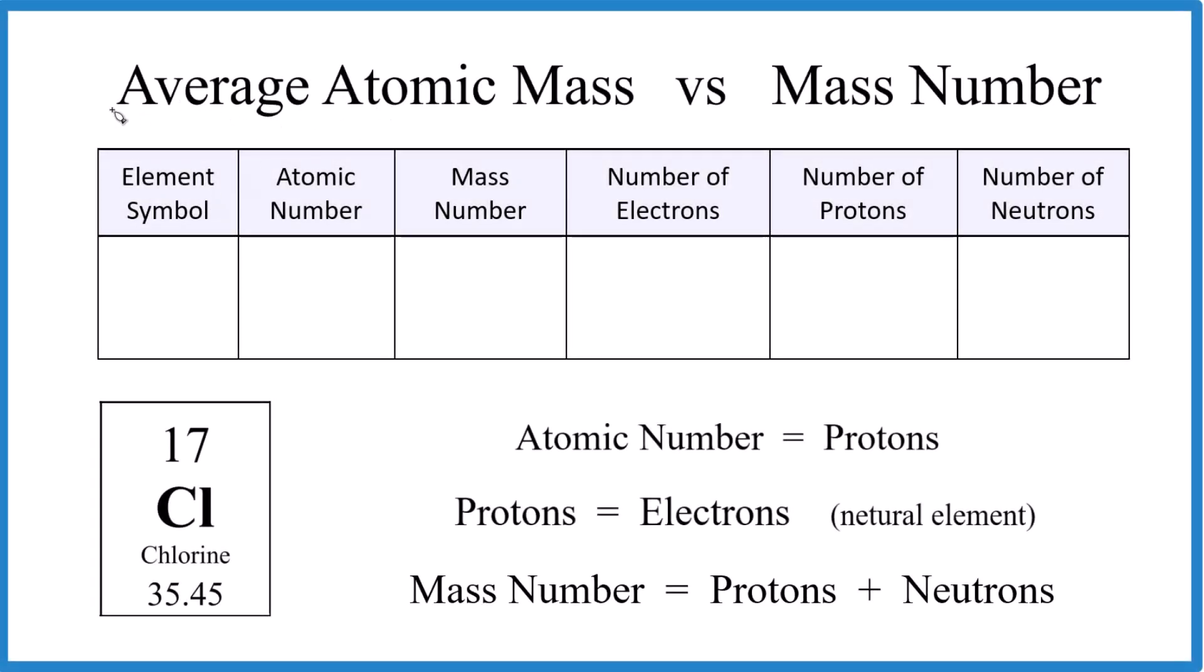Let's take a look at the difference between average atomic mass and the mass number. So we're talking about atoms here. The average atomic mass, that's the average mass of the isotopes, different atoms, say, of chlorine in a sample.